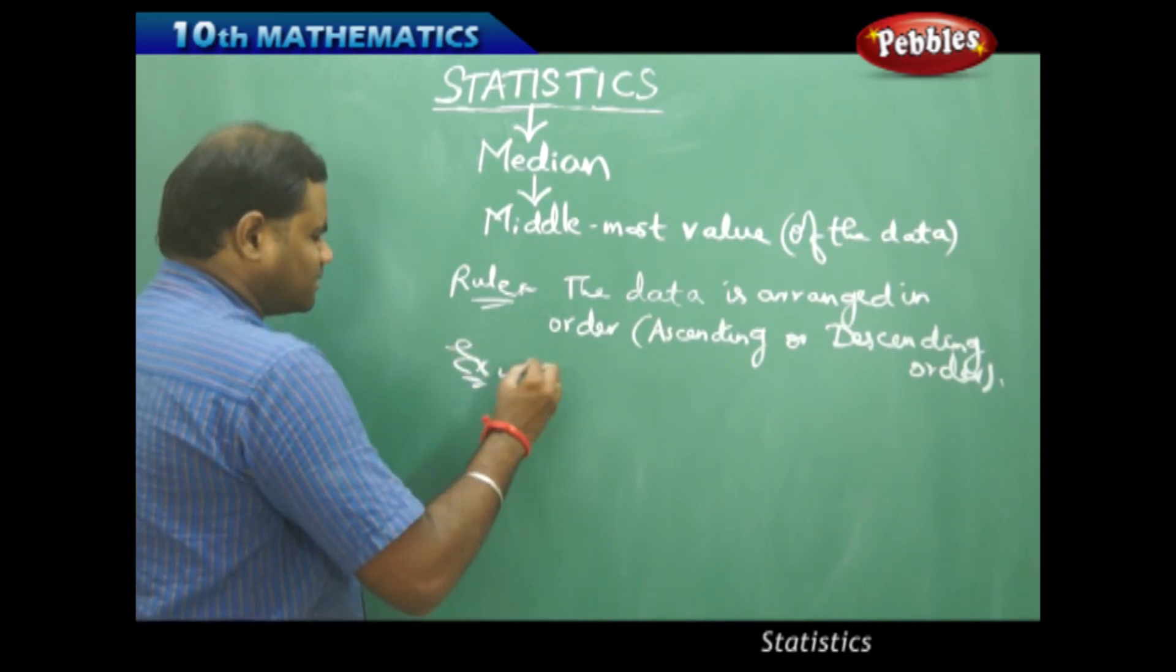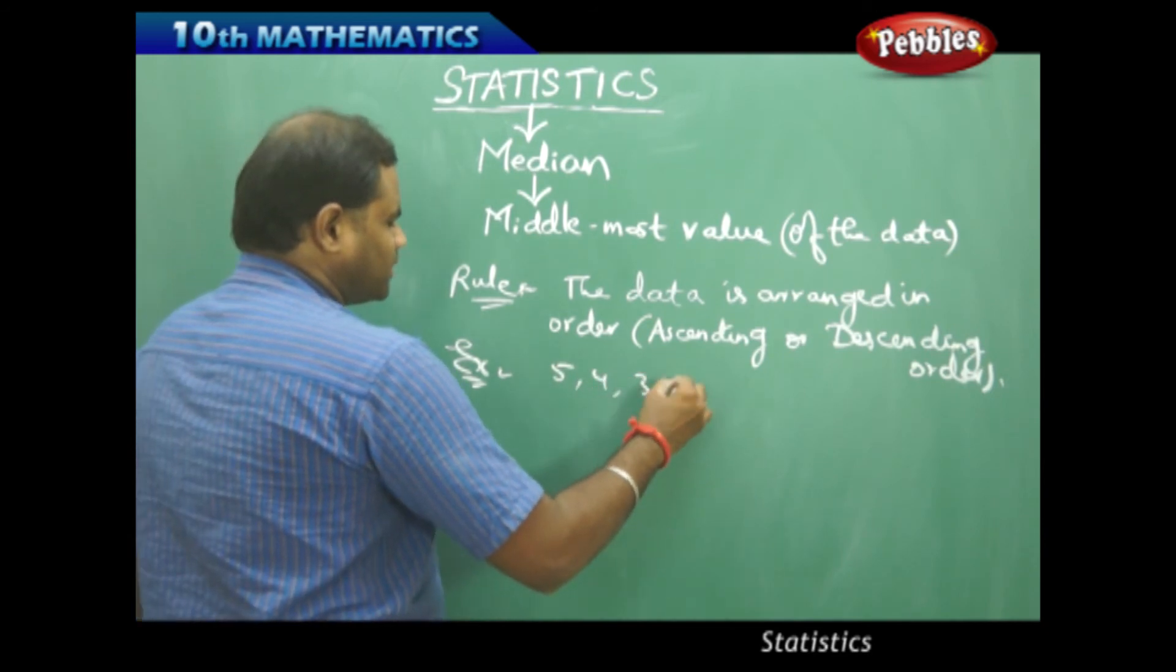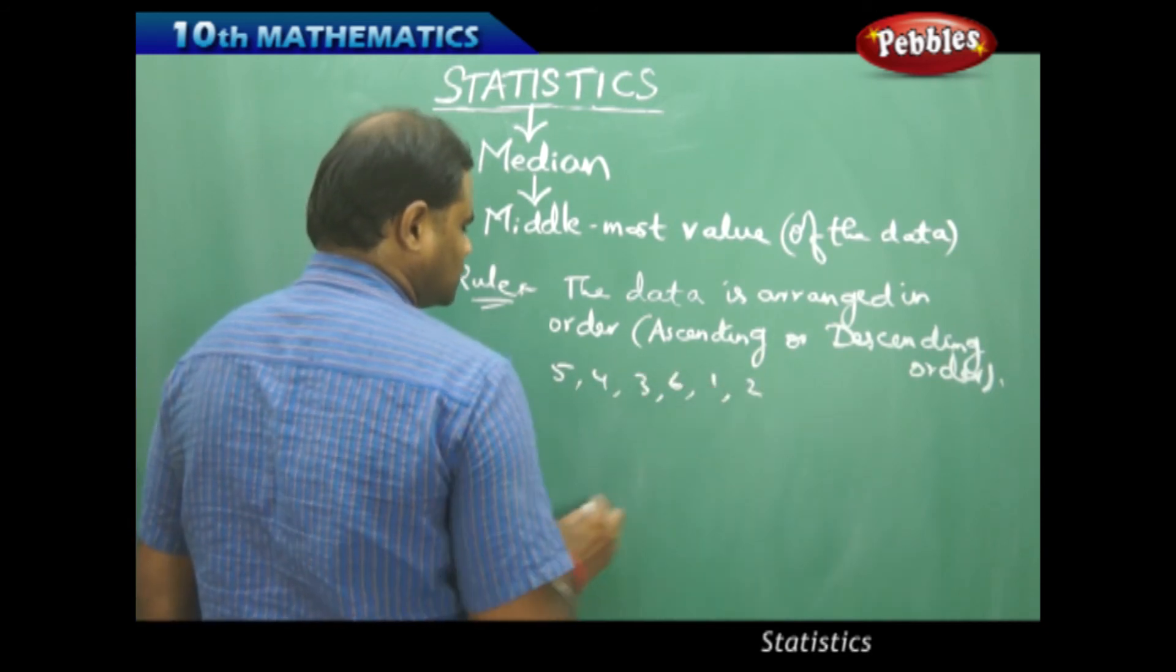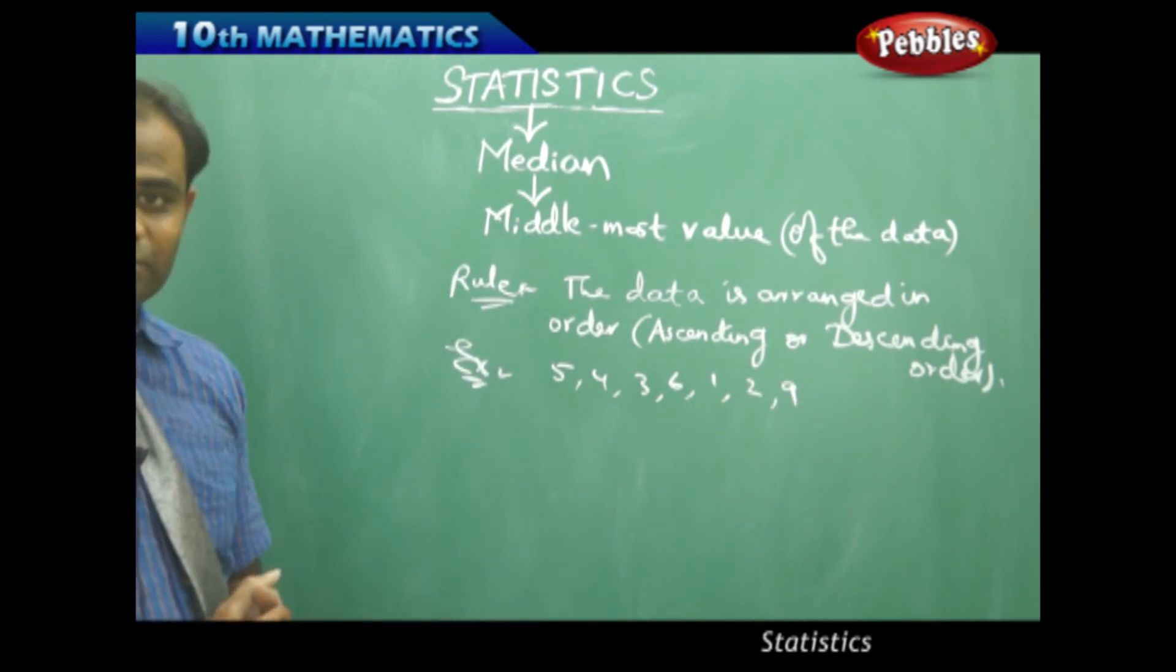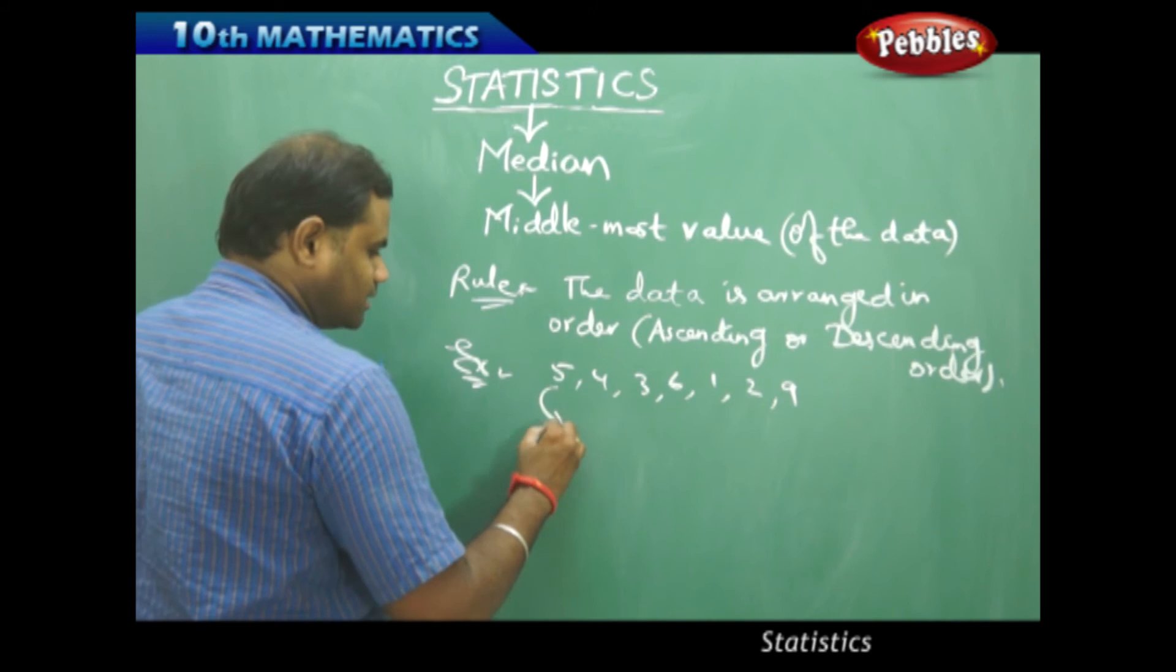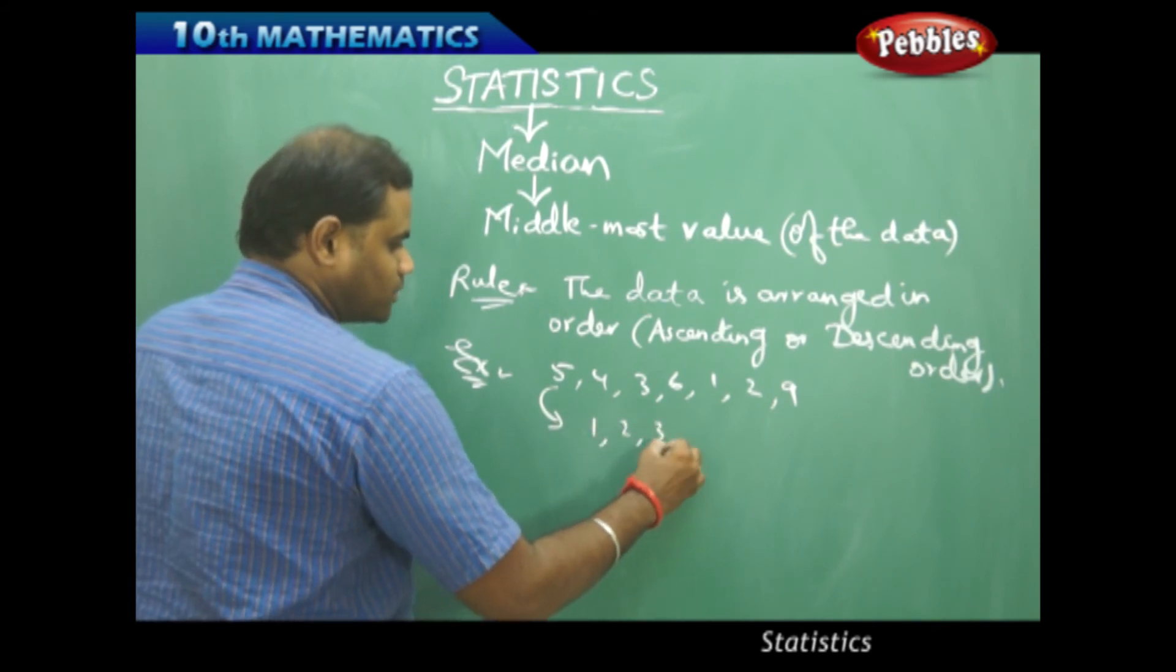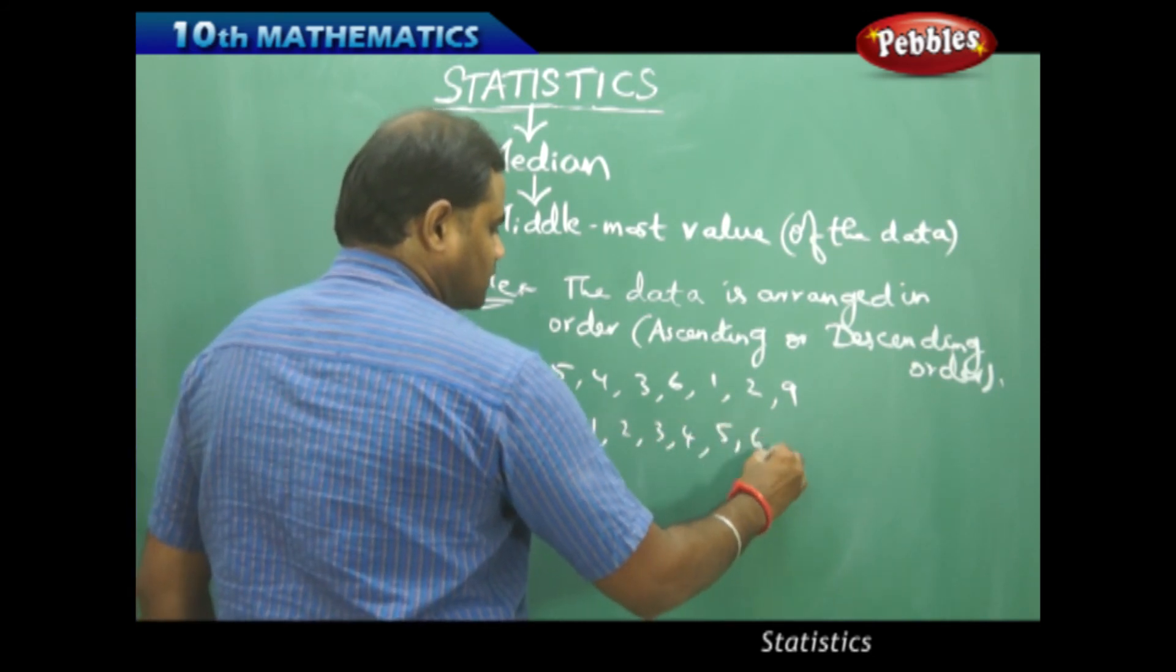For example, I take 5, 4, 3, 6, 1, 2, 9. So I try to arrange this in order so that this gives 1, 2, 3, 4, 5, 6, and 9.